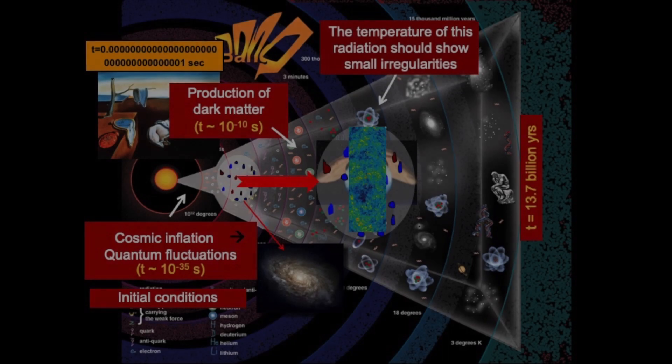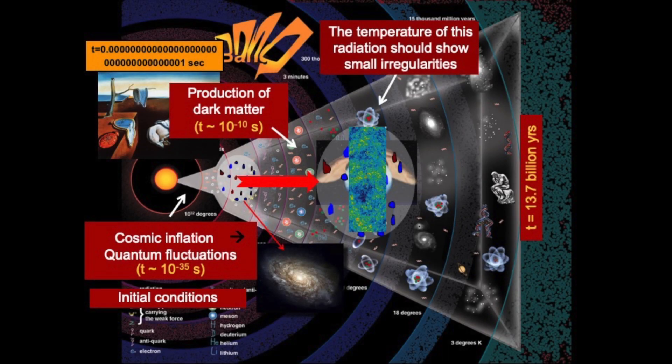The story about the formation of structures in the universe is a fascinating story that physicists and astronomers are beginning to piece together. Amazingly, the story begins very soon after the Big Bang — about 10 to the minus 35 seconds into the life of the universe, to be precise. That's a decimal point, 34 zeros and a 1 — that fraction of a second after the beginning of our universe.